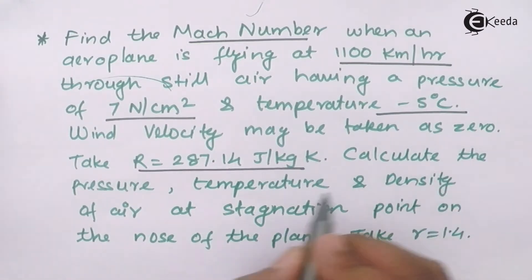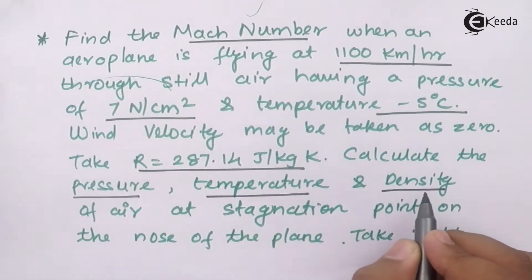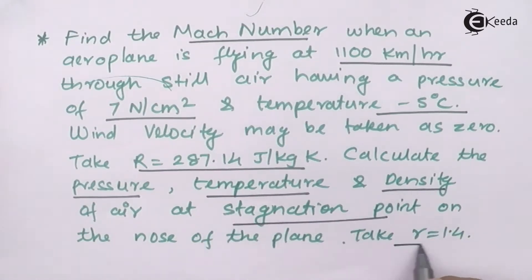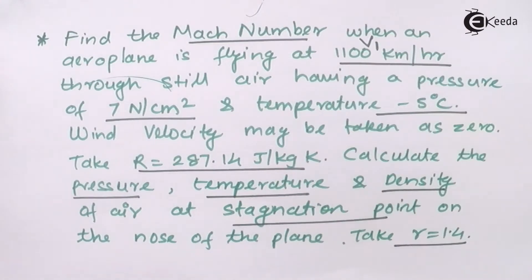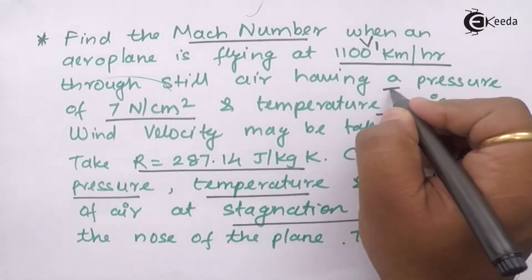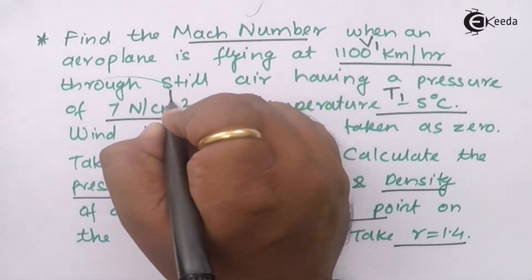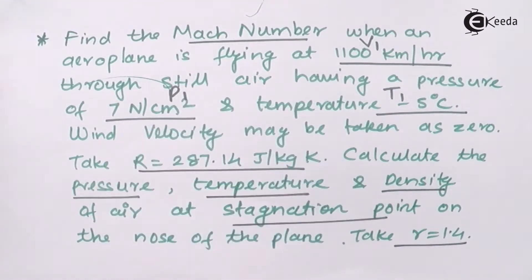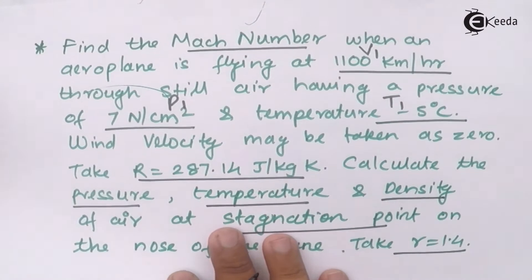We have to calculate the pressure, density, as well as temperature at the stagnation point, taking gamma equals 1.4. First we have the velocity of the fluid V1, then the temperature of the air T1, and the initial pressure P1. There is no density of the fluid given.